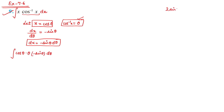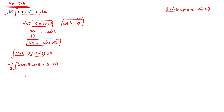We use the identity 2sinθcosθ = sin2θ. Since we have cosθ·sinθ but not the factor of 2, we multiply and divide by 2: we get −1/2 ∫θ · sin2θ dθ. Here θ is the first function and sin2θ is the second function for integration by parts.